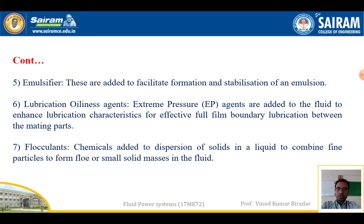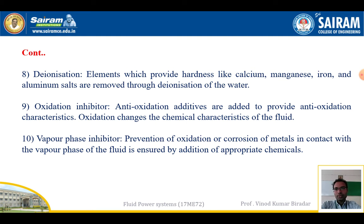The seventh type is a flocculant — a chemical added to a dispersion of solids in a liquid to combine fine particles into floc or small solid masses within the fluid, joining small particles in the hydraulic power system. The eighth type is a deionization additive, which removes elements that provide hardness — such as calcium, magnesium, iron, and aluminum salts — through deionization of water.